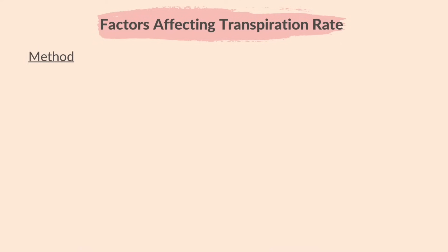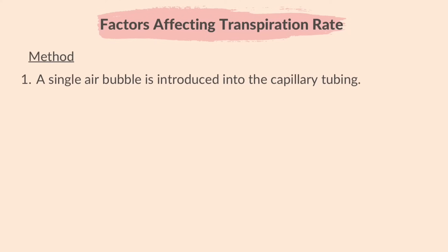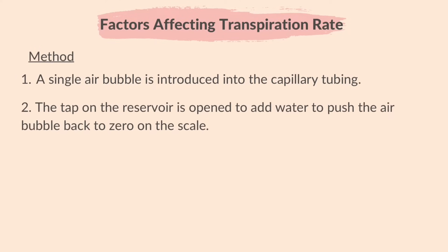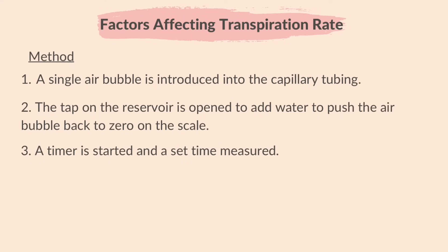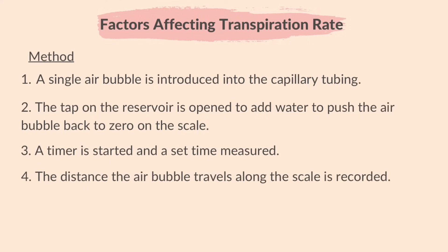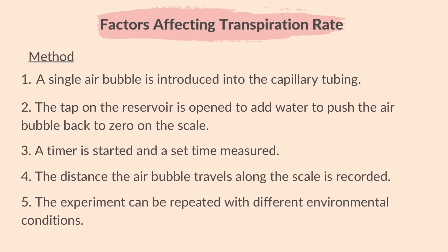The method for this experiment is: a single air bubble is introduced into the capillary tubing. The tap on the reservoir is opened to add water to push the air bubble back to zero on the scale. A timer is started and a set time is measured. The distance the air bubble travels along the scale is recorded — record the starting location as well as the end location. The experiment can be repeated with different environmental conditions, such as changing the wind speed or temperature, to see how it affects the transpiration rate.